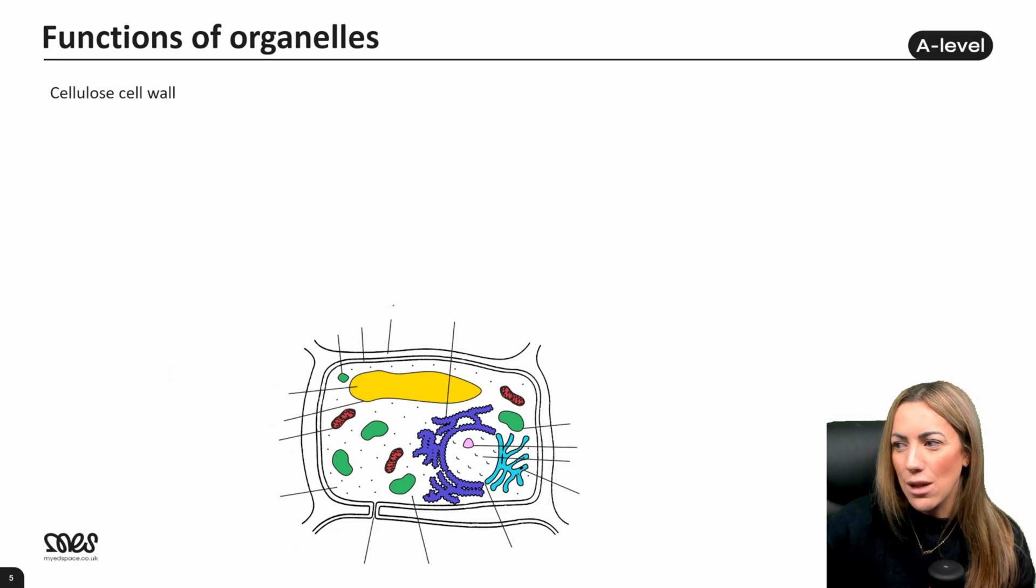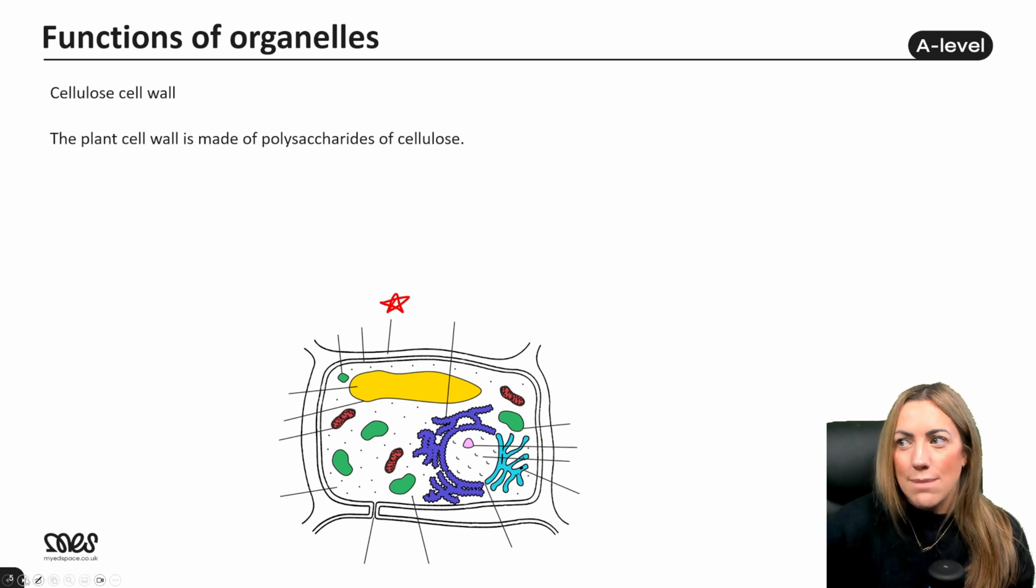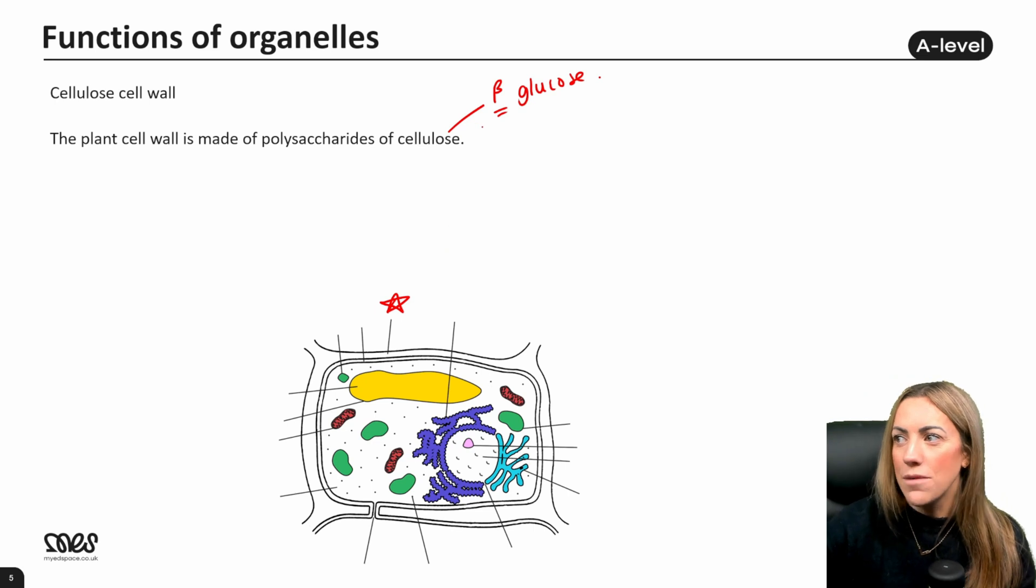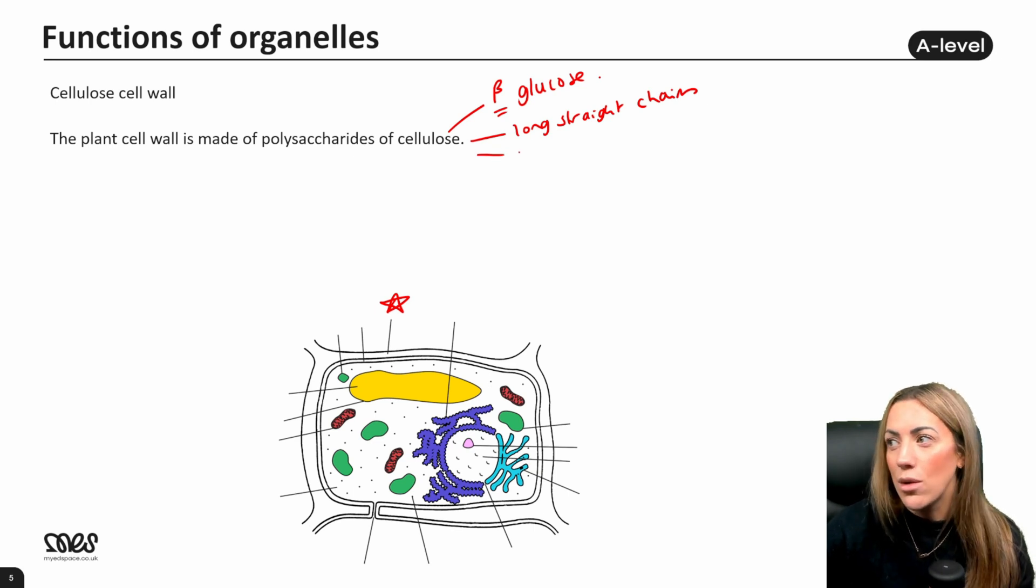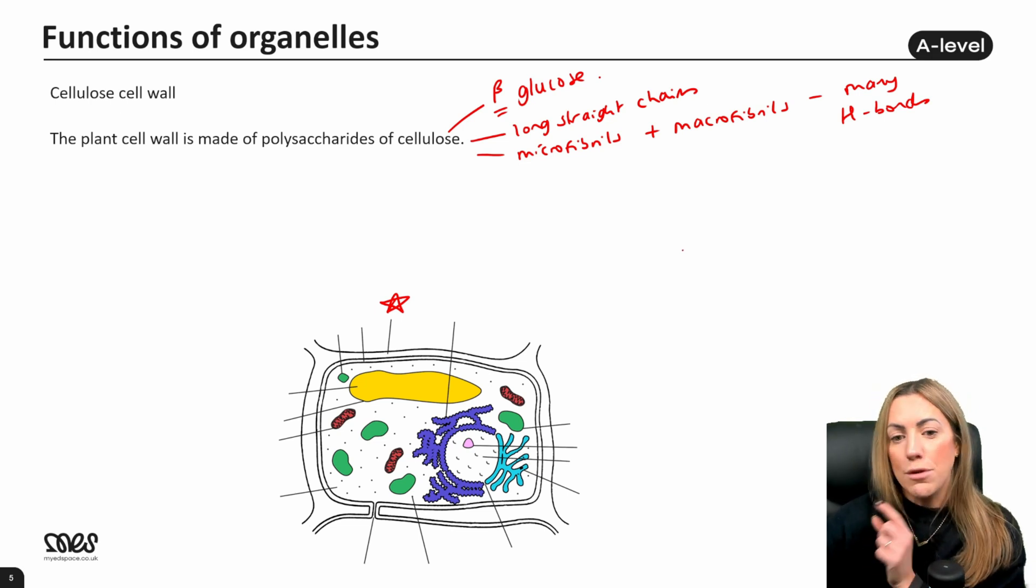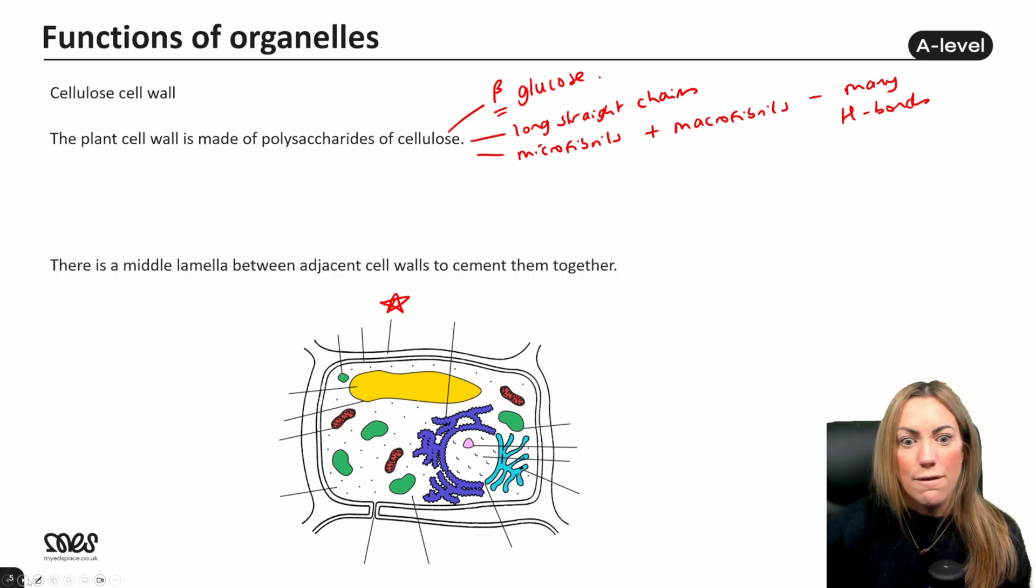The cellulose cell wall, which is on the outside of the plant cell, is made of the polysaccharide cellulose. You'll remember from biological molecules, cellulose is made from many beta-glucose monomers joined together with glycosidic bonds. They are long, straight chains of beta-glucose that run parallel with each other to form microfibrils, and many microfibrils joined together to form macrofibrils, and that's all held together with many hydrogen bonds. So a little revision there on the structure of cellulose, but those many hydrogen bonds are really important for the strength of that cell wall.